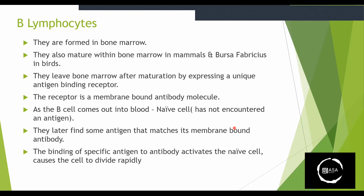B lymphocytes — the B cells are formed in the bone marrow and undergo maturation in the bone marrow. The 'B' originally comes from birds, referring to the bursa of Fabricius, and they mature in the bone marrow.